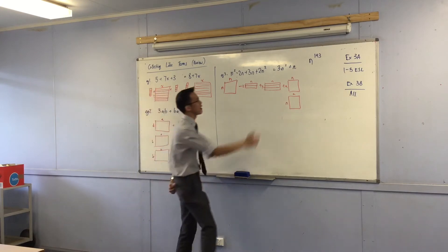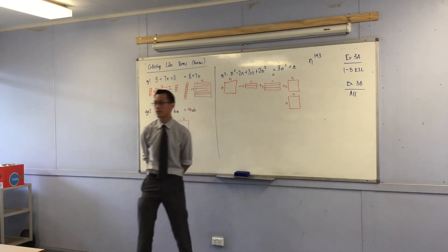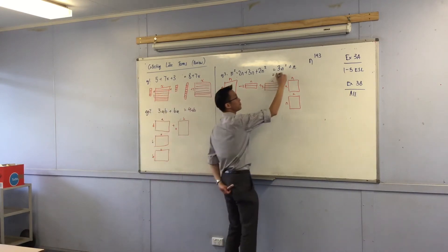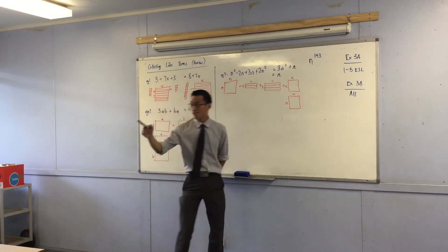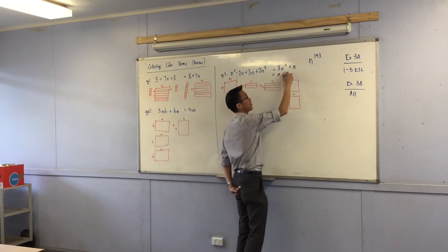How would you factorize this answer? What could you take out? Then you could take out an n, right. What would that leave you with in the brackets? 3n and plus 1, right.